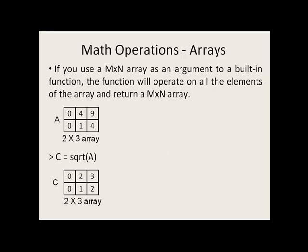If you use an M by N array as an argument to a built-in function, say sine or cosine or square root, the function will operate on each element in the array and will return an array of the same size. So in this example, we have an array A which is a 2 by 3. It has six elements. We can say square root of A, and the square root function will operate on each element of A. The resulting array C is also a 2 by 3.